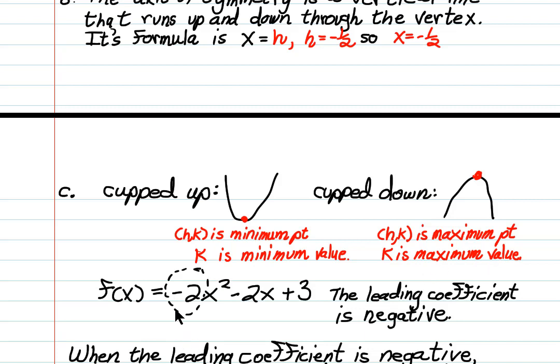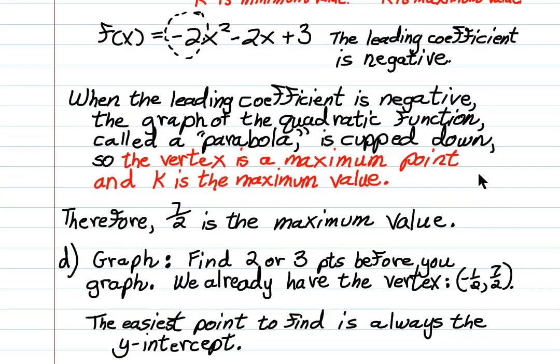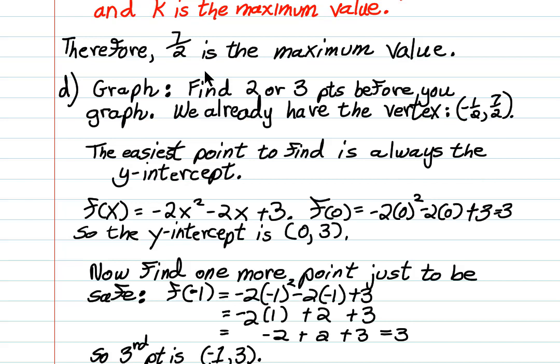It just so happens when the leading coefficient—here the leading coefficient is negative 2—when the leading coefficient is negative, we have a cupped down parabola. So that means that our parabola, which is the graph of f(x) equals negative 2x squared minus 2x plus 3, is a cupped down parabola. The vertex is going to be a maximum point and k is going to be the maximum value. Therefore, 7 over 2 is the maximum value.